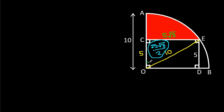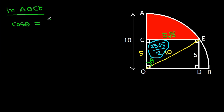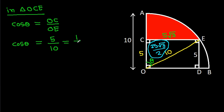Now, suppose the angle at O in triangle OCE is theta. Then cos θ = OC/OE = 5/10 = 1/2, so theta is 60 degrees.